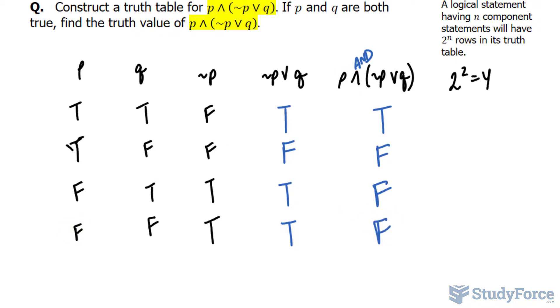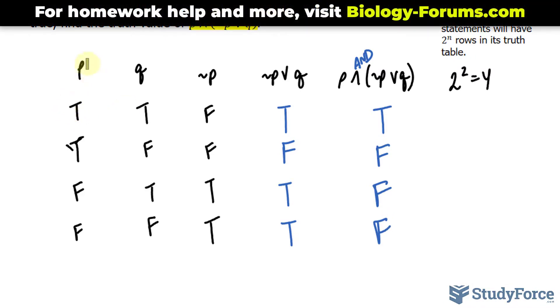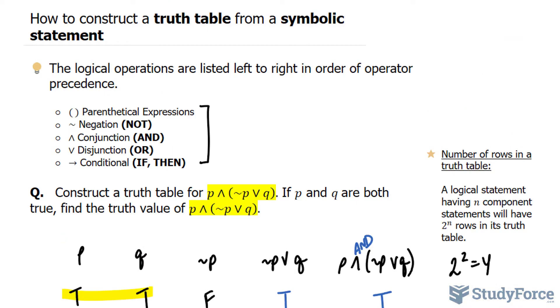Therefore, the only true value is when p is true and q is true, as assumed at the very beginning of this question. And there you have it. That is how to construct a truth table from a symbolic statement.